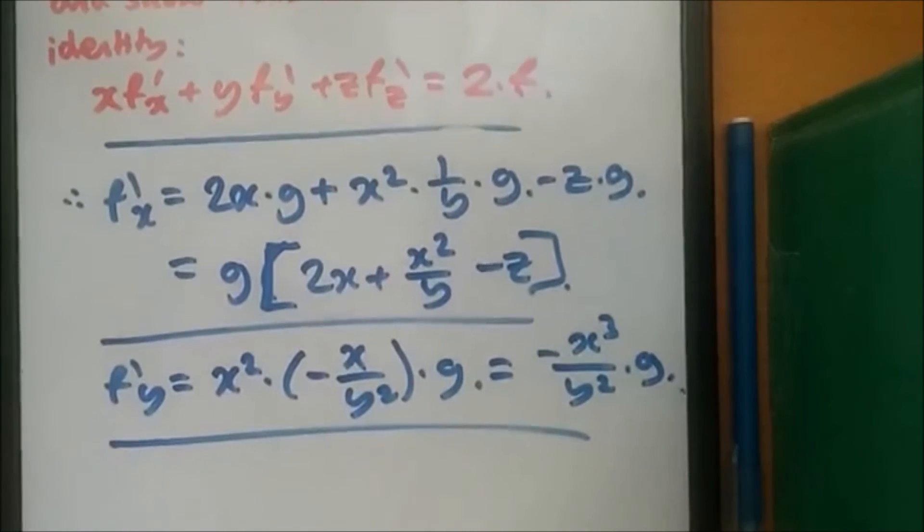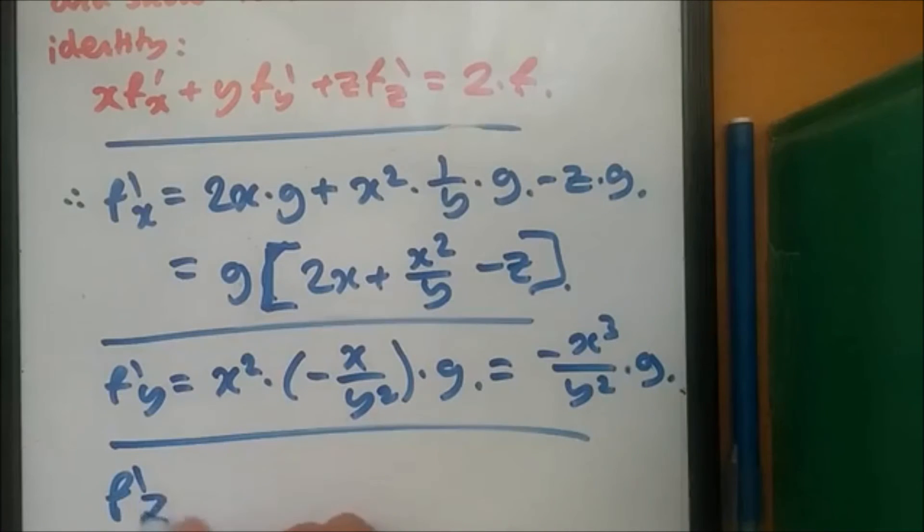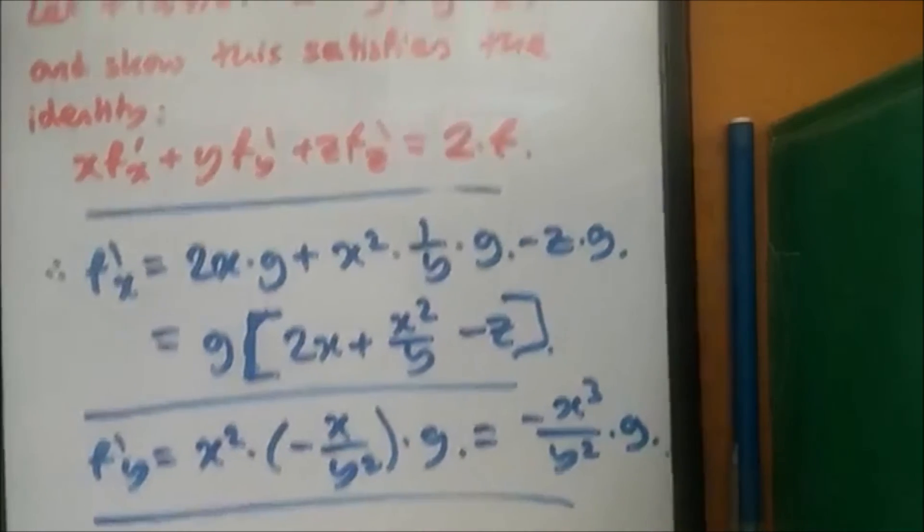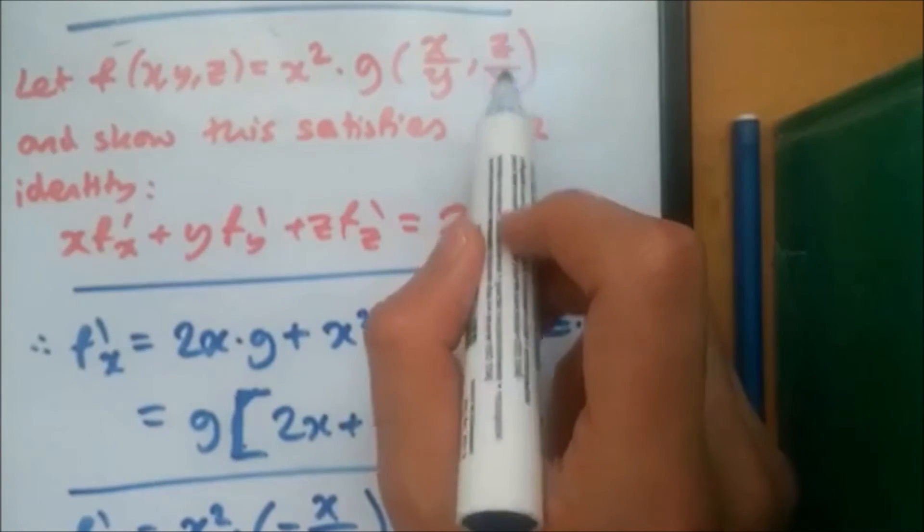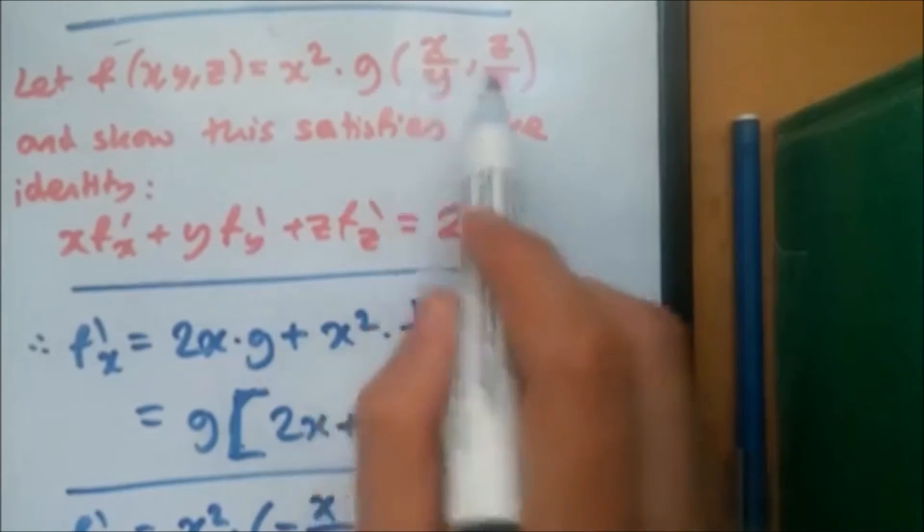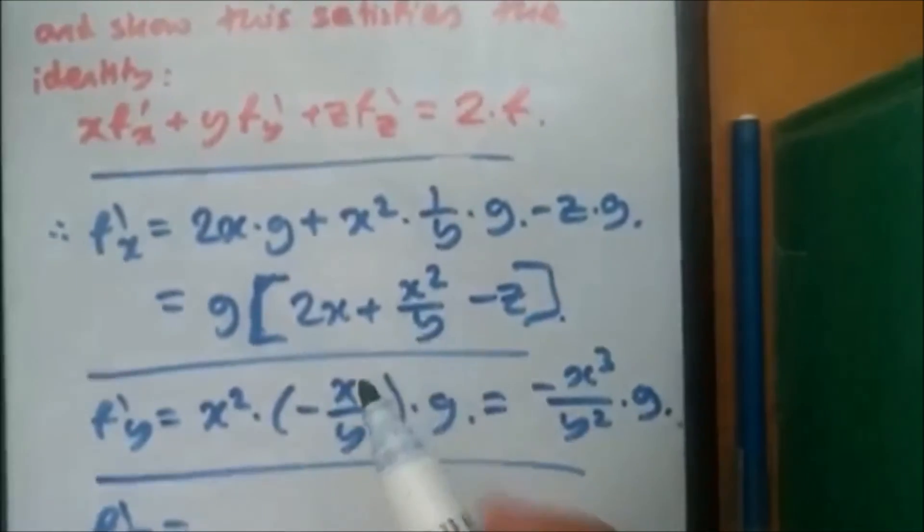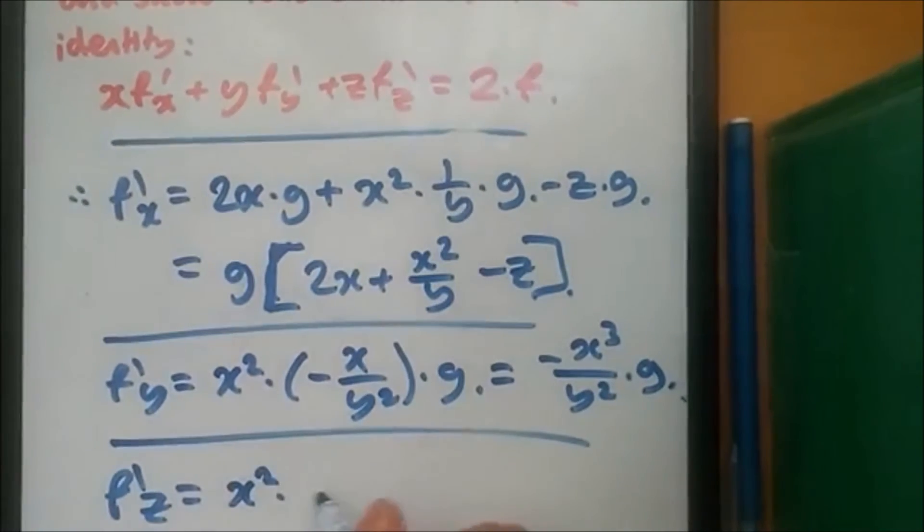And lastly, we do the function for z. Taking the derivative of fz. Now, back here, it's the same technique. So now z is the main and it's over x. So taking the derivative of this part, it's just going to be 1 over x. So 1 over x times x squared.